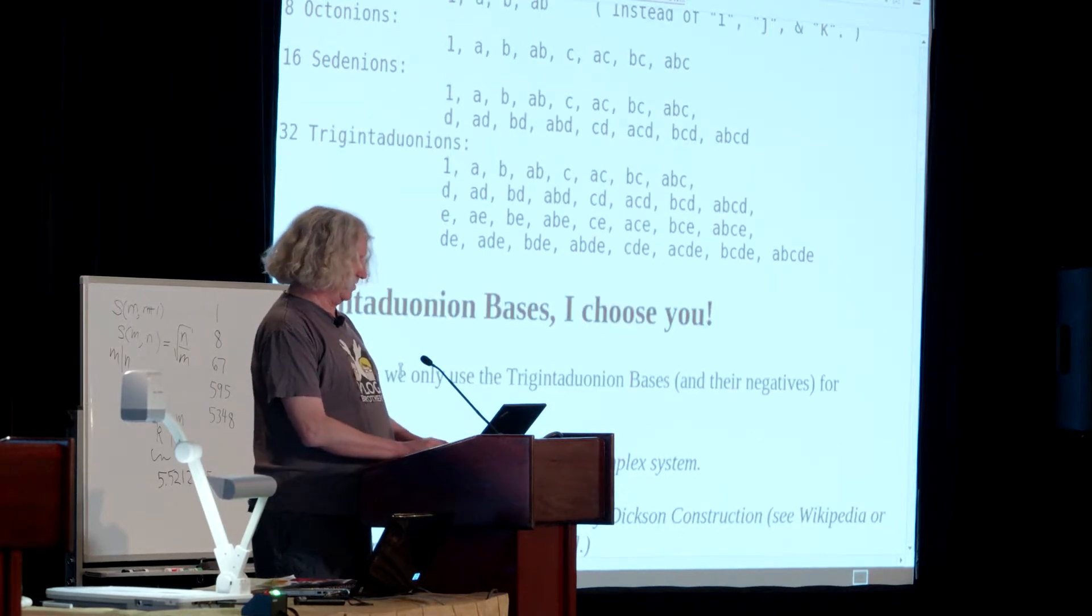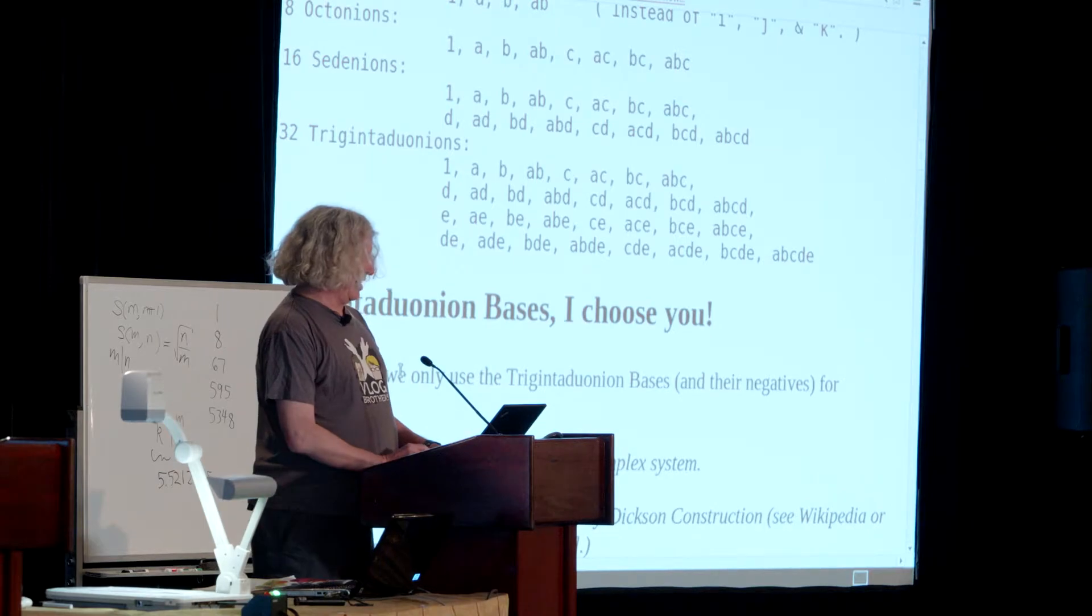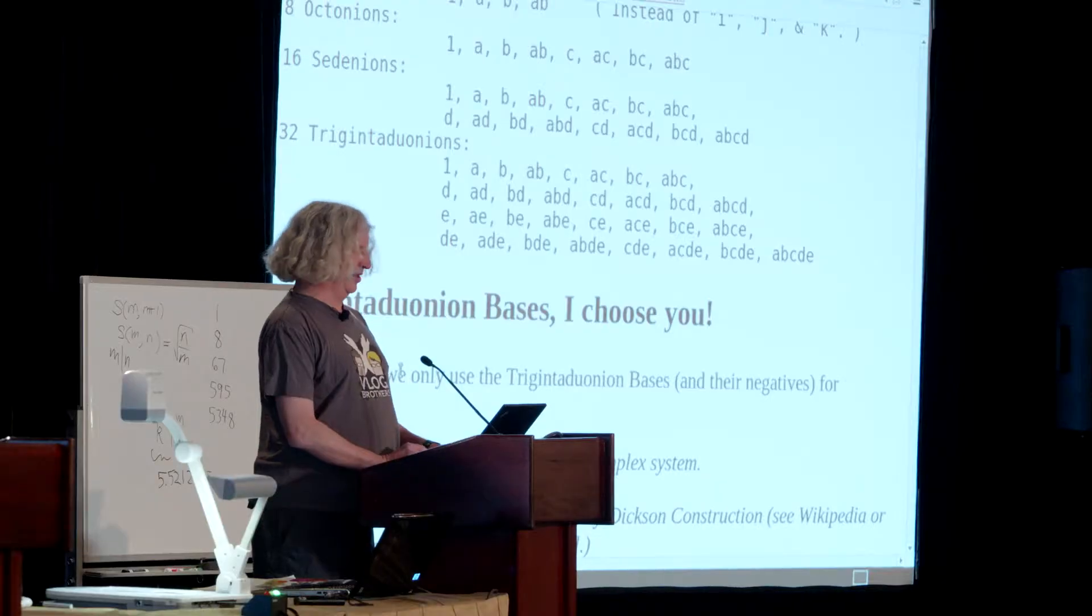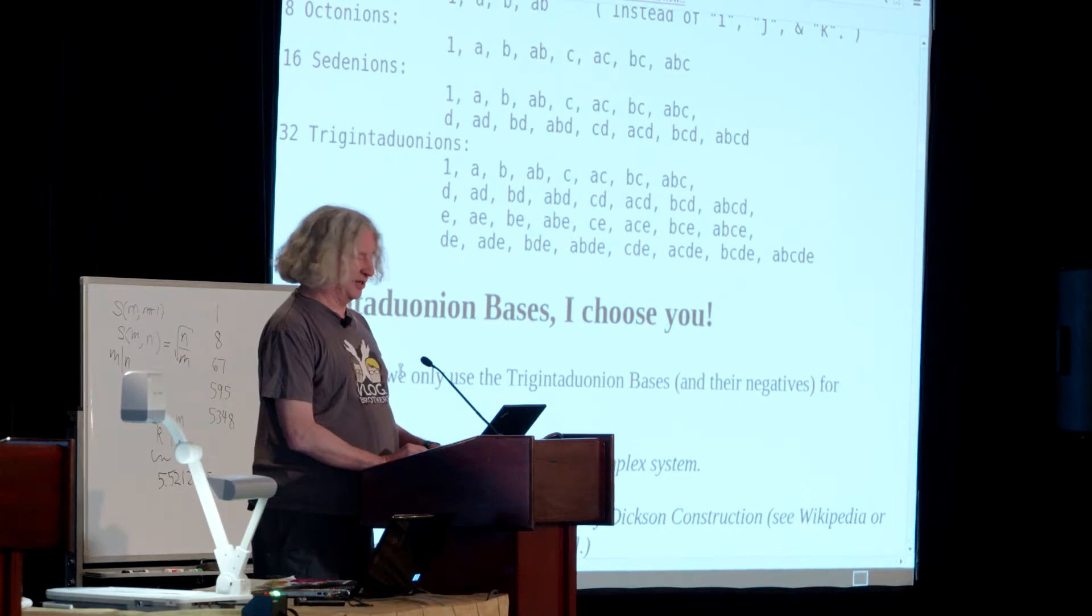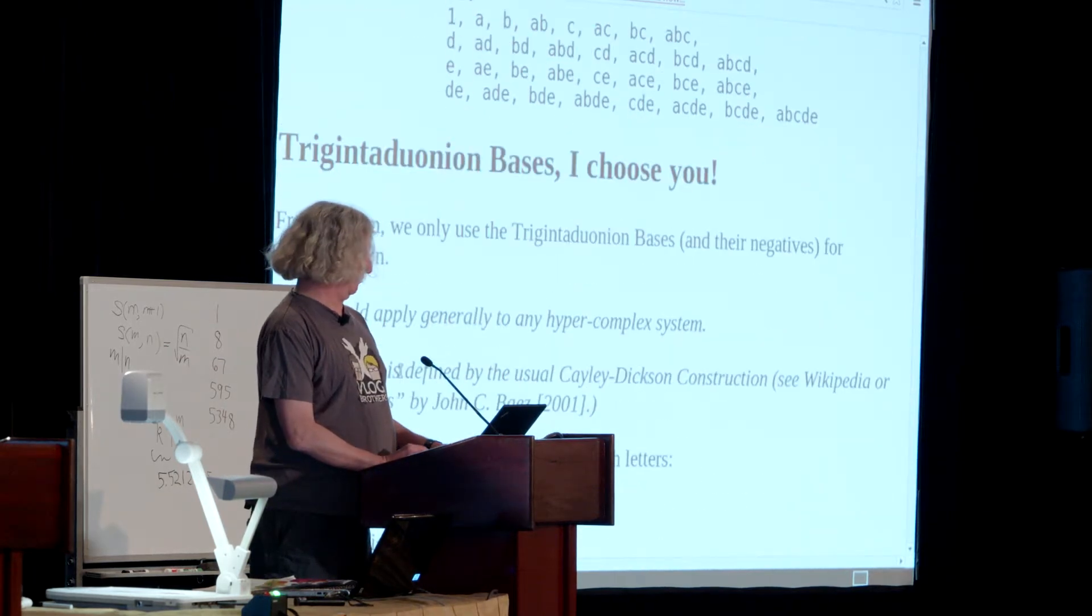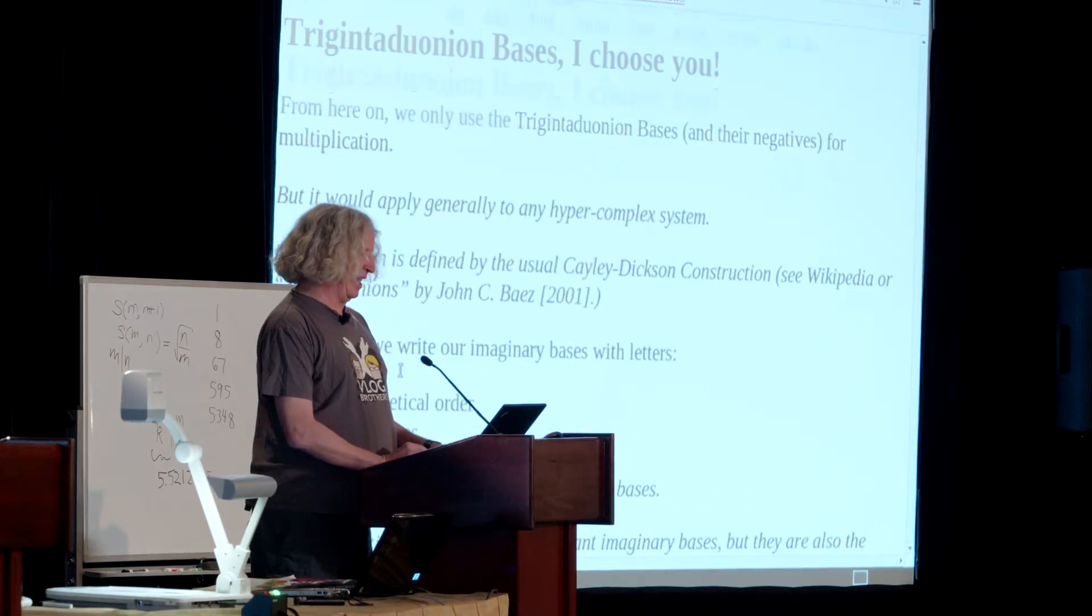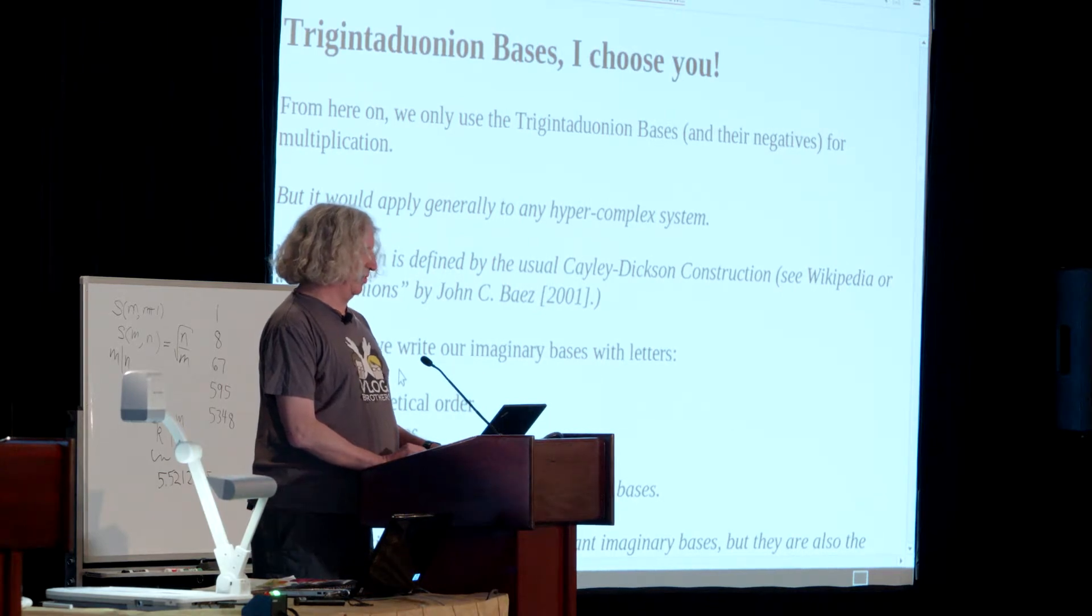I've listed all 32 of them there. Now, if you take those along with their negatives, you get a set of 64 that are closed under multiplication, and that's actually where the game takes place.